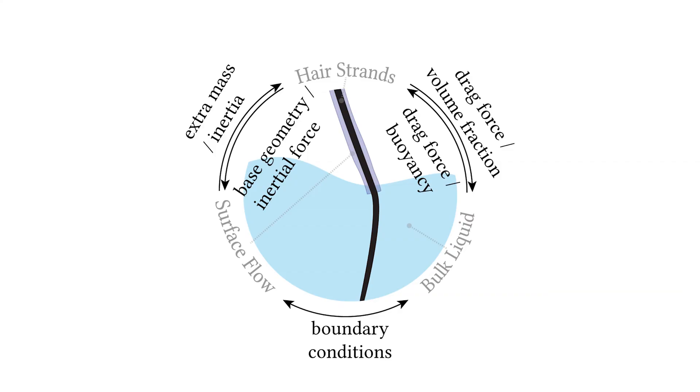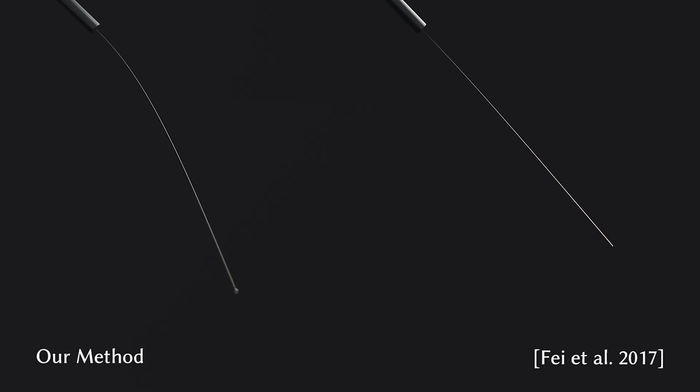To complete our system, we must couple the three components together. We developed a principled method to account for the additional strand inertia induced by the motion of the surface liquid. Here, we simulate a heavy droplet flowing down a thin strand. Our method can simulate the scenario stably, while prior work cannot.